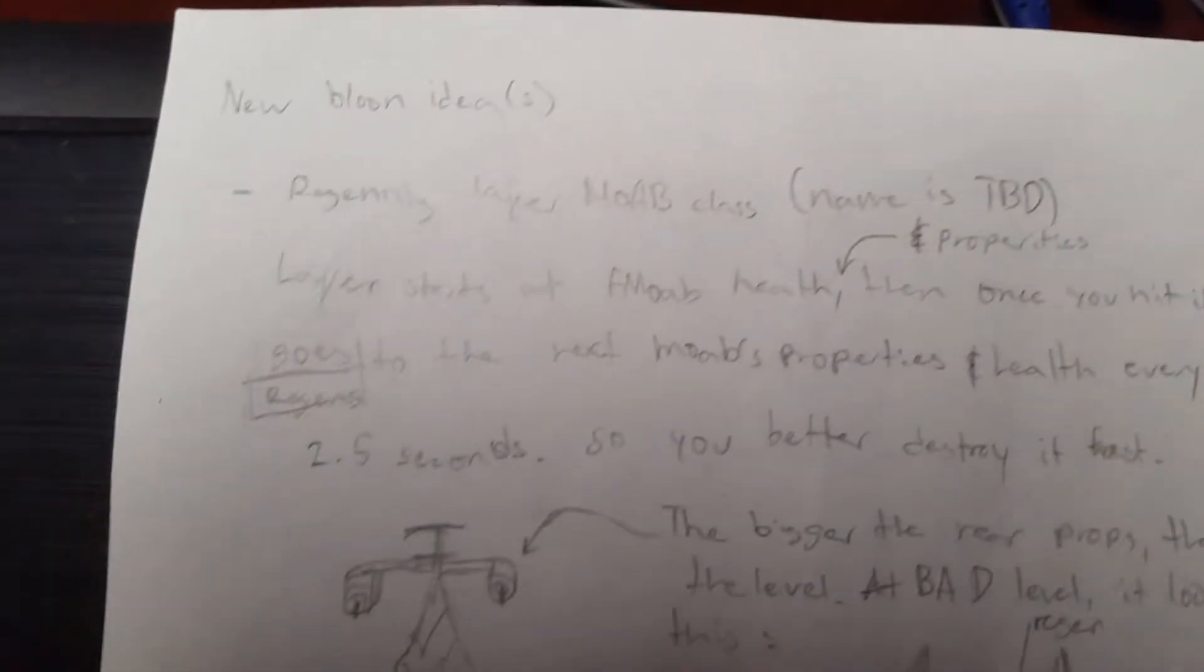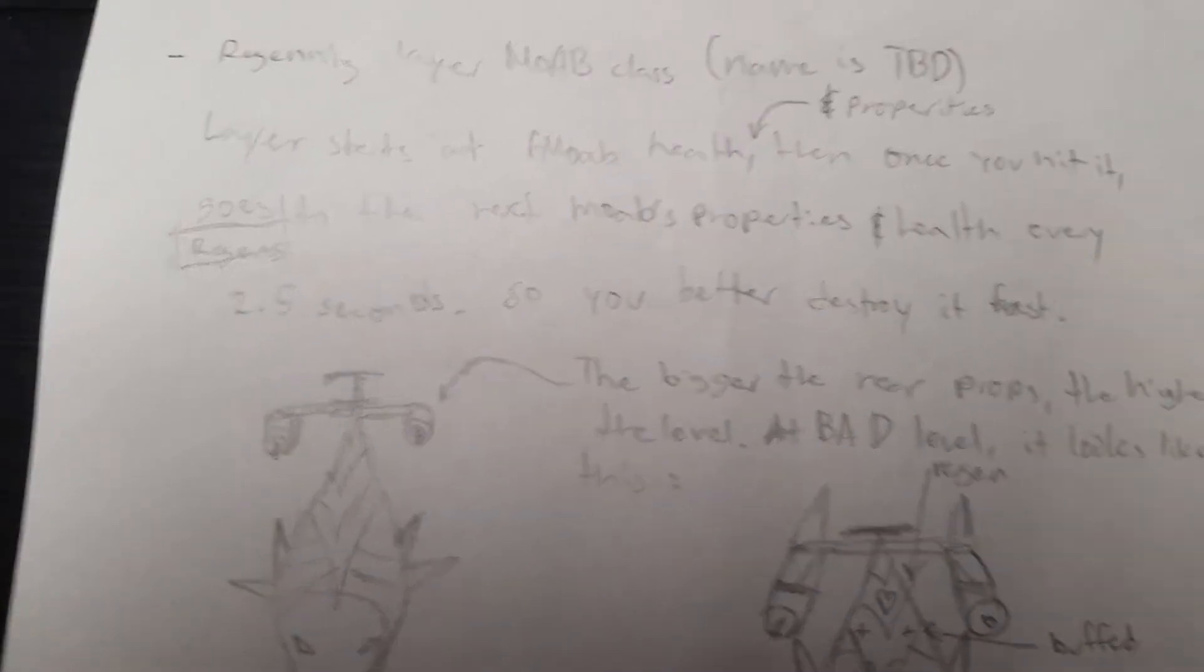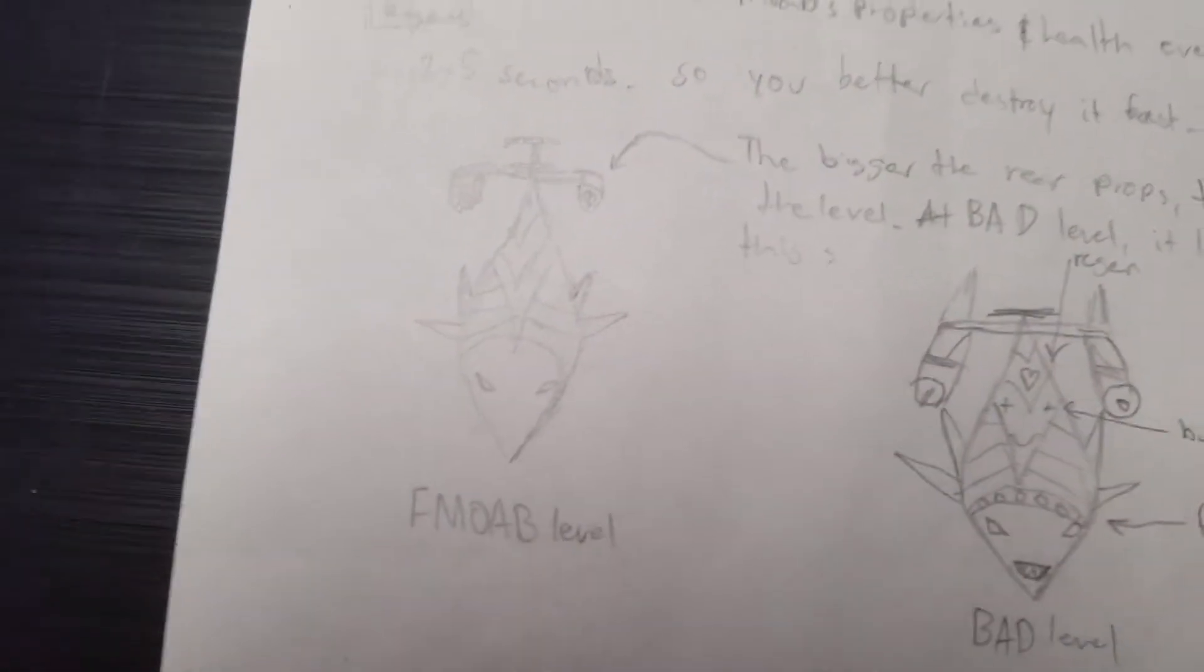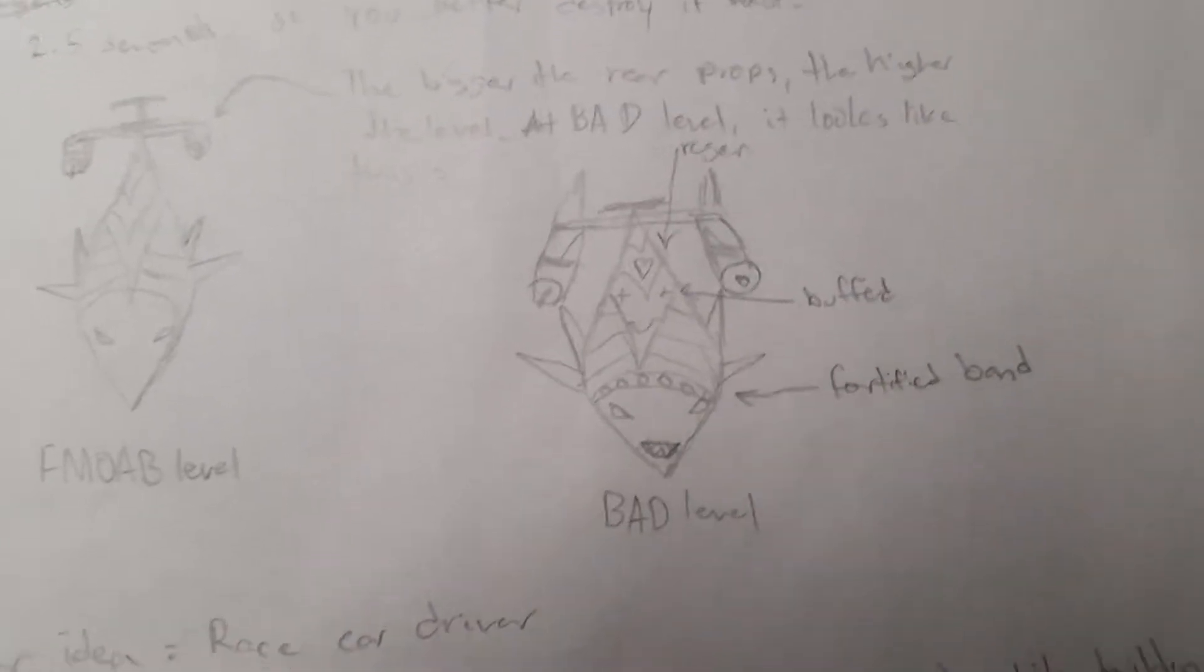Once you do damage to the blimp, it regens, so you better destroy it fast. At fortified MOAB level it looks like that, and as it regens it changes to have more wings.